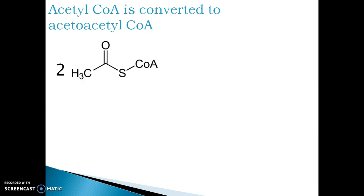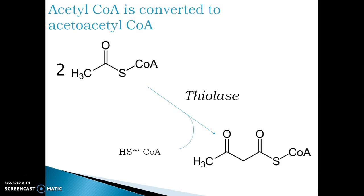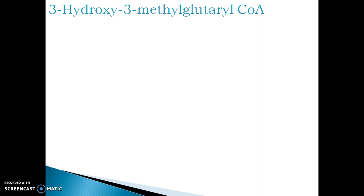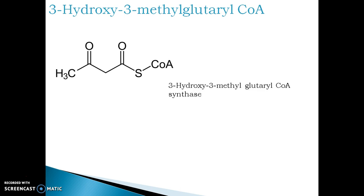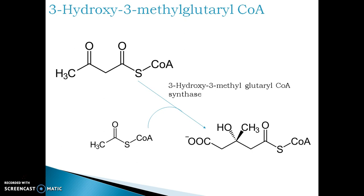Two molecules of acetyl coenzyme A are condensed. This condensation reaction is catalyzed by thiolase and it forms acetoacetyl coenzyme A, releasing one molecule of coenzyme A. The molecule of acetoacetyl coenzyme A is then acted upon by the enzyme 3-hydroxy-3-methylglutaryl coenzyme A synthase. The activity of this synthase enzyme converts acetoacetyl coenzyme A into 3-hydroxy-3-methylglutaryl coenzyme A, which is popularly called as HMG-CoA.